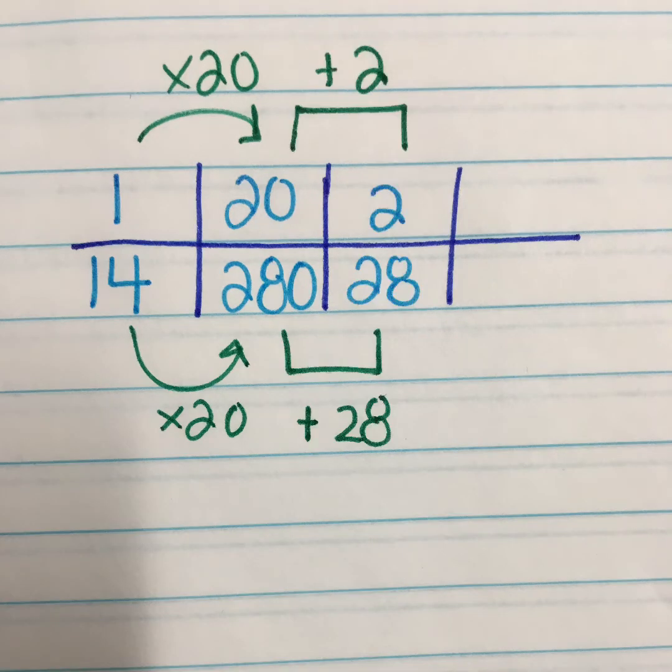Since I already know that 20 times 14 is 280, I need to figure out how far away I am from 308. I know that 280 plus 20 is 300. And plus 8 would be 308. So that's 28. And I know 14 times 2 is 28. Because I already did that. So my work here demonstrates that 280 plus 28 is going to get me to my 308.